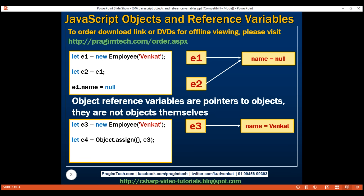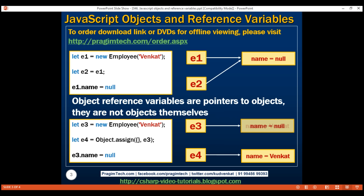To Object.assign we pass two parameters: the first is an empty target object into which all the properties of the second object — in our case e3 — will be copied. Our reference variable e4 then points to that newly copied object. So at this point we have two reference variables and two distinct objects. If we change the name property using e3, only that object is affected; the object pointed to by e4 is not affected, so e4.name still returns Venkat.